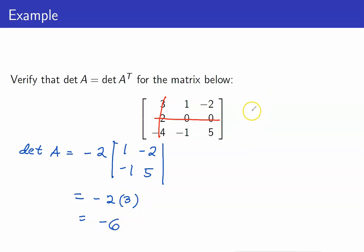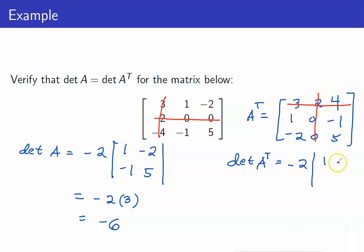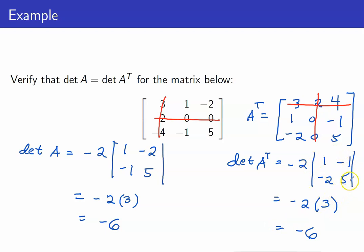Let us compute for its A transpose. We will compute the determinant of A transpose by using the cofactor expansion along the second column. We have the plus, minus sign pattern, and then 2. Delete the column and the row containing that entry. We get 1, negative 1, negative 2, 5. This is negative 2 times 5 minus 2 again, so it equals negative 6. Note also that the matrix that resulted here is the transpose of the matrix from the previous computation.